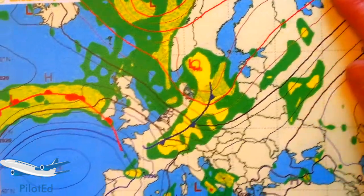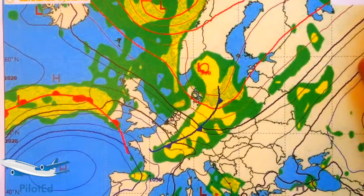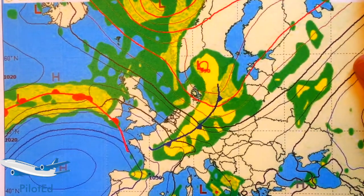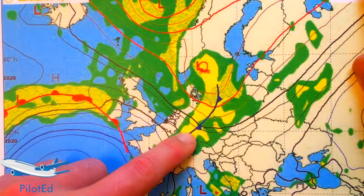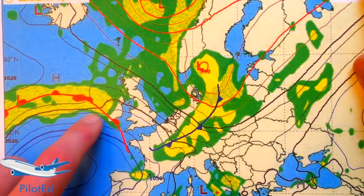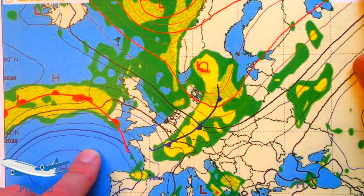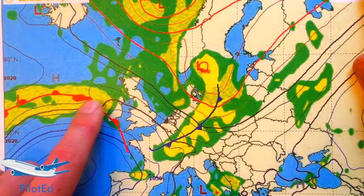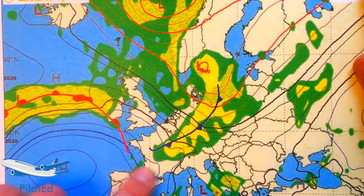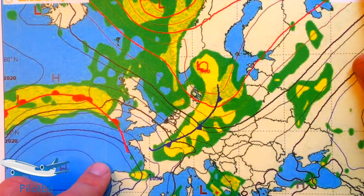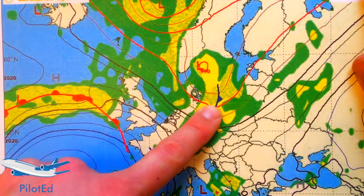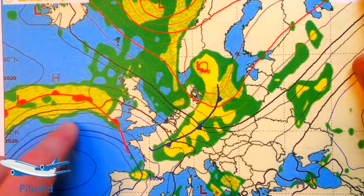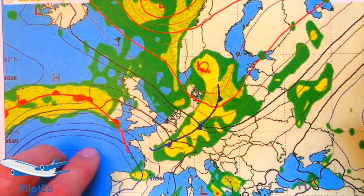We also have essentially a surface weather chart like you'd get from the TV — you can see a cold front and warm front moving in, pressure bars, highs and lows. This is where the weather fronts are forming. The information comes from the Lufthansa system.